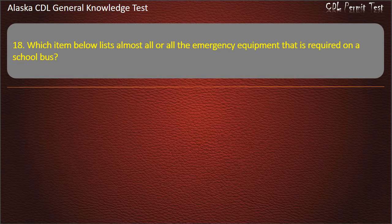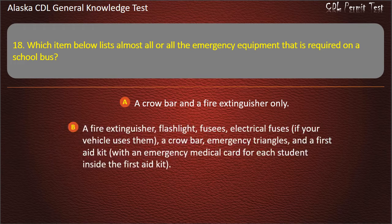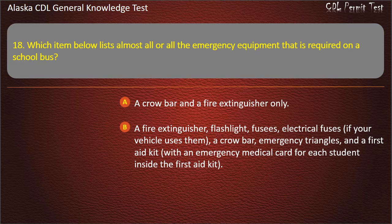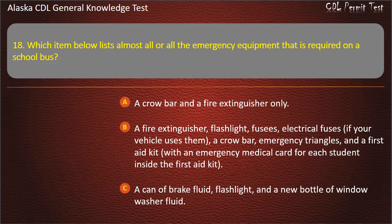Question 18. Which item below lists almost all or all the emergency equipment required on a school bus? A fire extinguisher, flashlight, fusees, electrical fuses if your vehicle uses them, a crowbar, emergency triangles, and a first aid kit with an emergency medical card for each student inside. Answer: Fire extinguisher, flashlight, fusees, electrical fuses, crowbar, emergency triangles, and first aid kit.